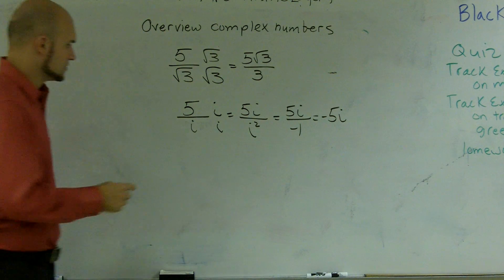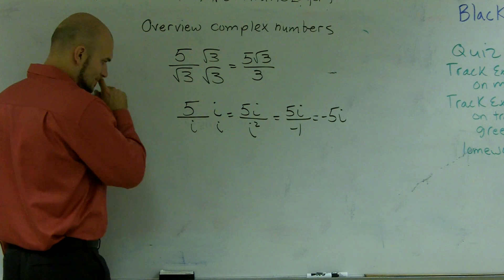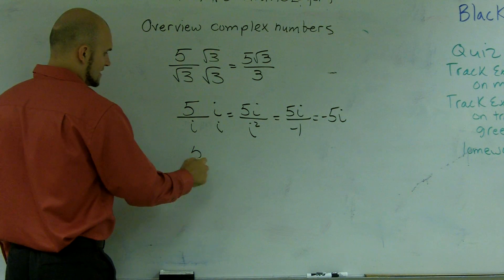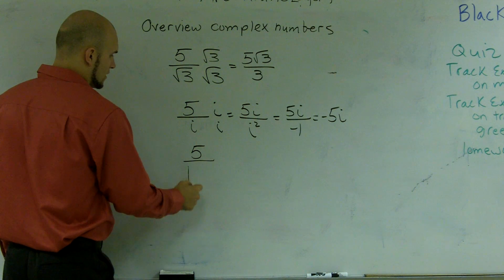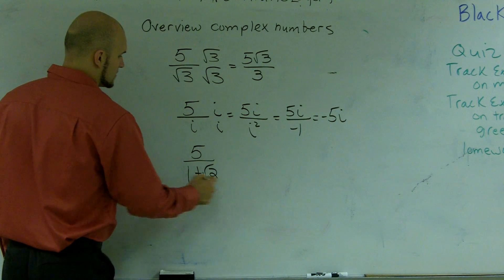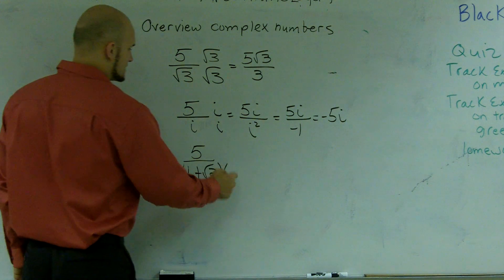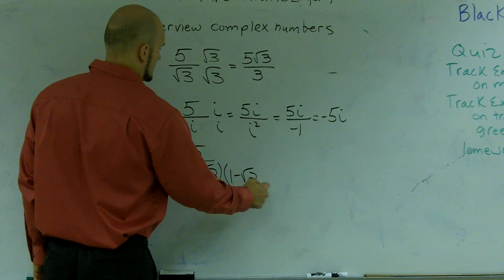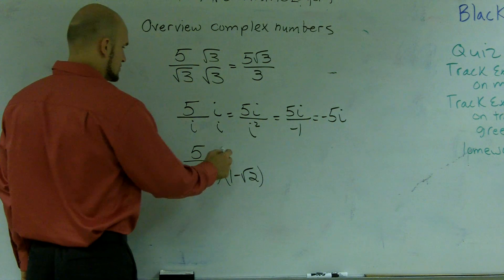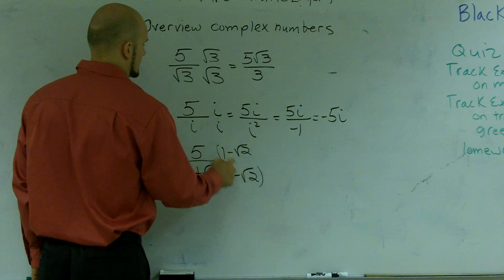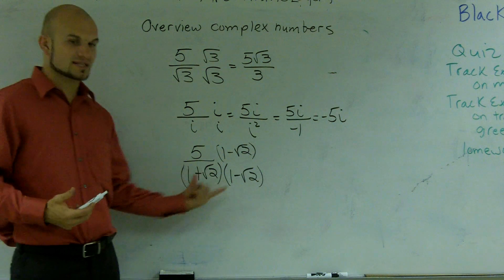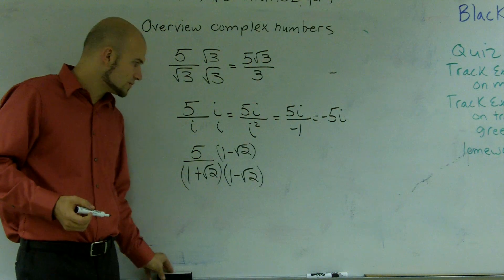And the last thing I want to talk about really quick is, let's say, when I'm multiplying, let's say I have 5. If I did 1 plus the square root of 2, with radicals, we would multiply by the conjugate, which would be 1 minus the square root of 2.